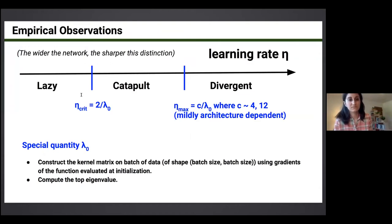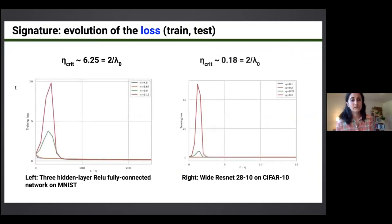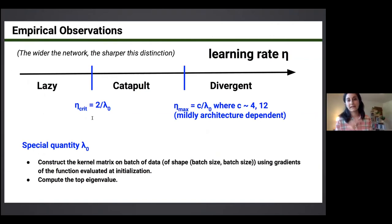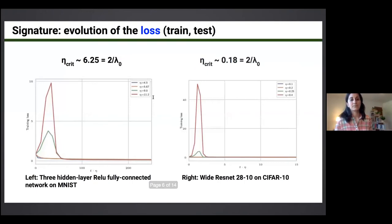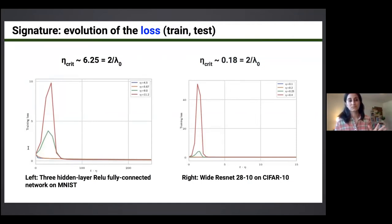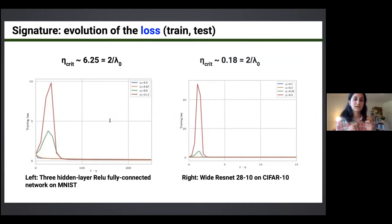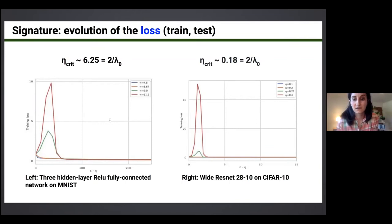What are the signatures of these two phases? Looking at how training or test loss evolves: in the catapult phase, loss actually grows very early in training as if about to diverge, but it comes back down. In the lazy phase, you see a smooth decrease. This is shown with green/red curves for catapult and blue/orange for lazy — both for a simple three-hidden-layer network on MNIST and for a wide ResNet on CIFAR-10.